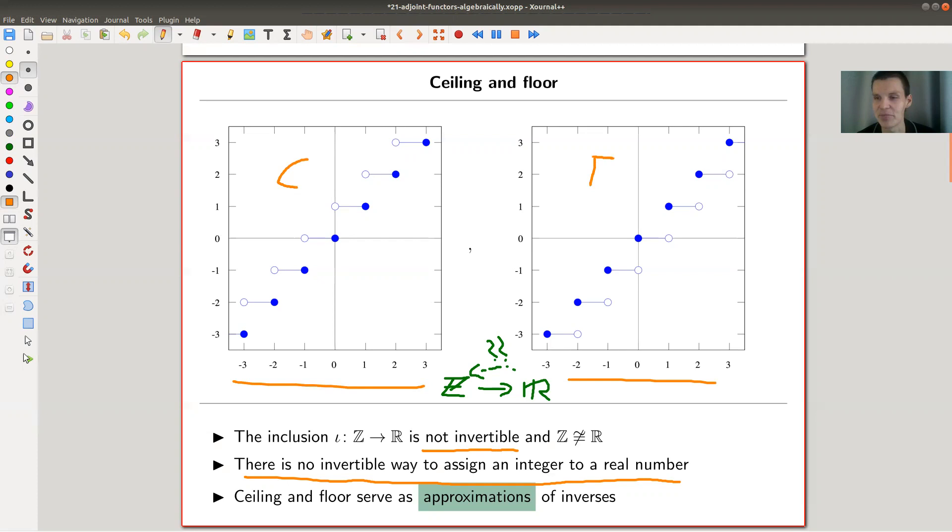So everything here, up to not including two is sent to one. Right, so the floor, the floor function, this was probably the ceiling function.